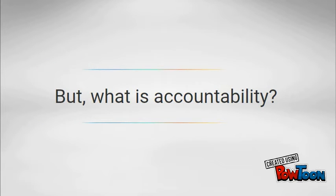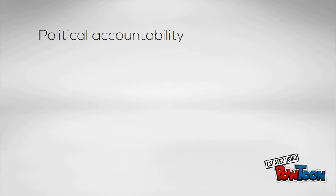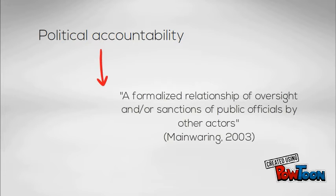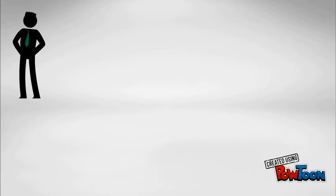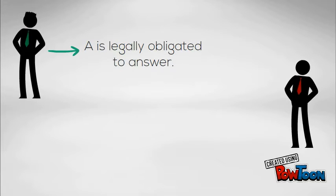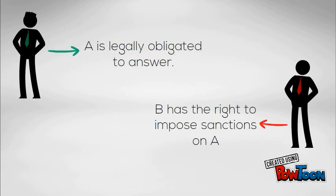What is accountability? To make things simpler, we're going to focus only on political accountability, that can be defined as the existence of a formalized relationship of oversight and/or sanctions of public officials by other actors. This involves the existence of an agent A that is legally obligated to answer, and an agent B that has the right to impose sanctions on agent A.